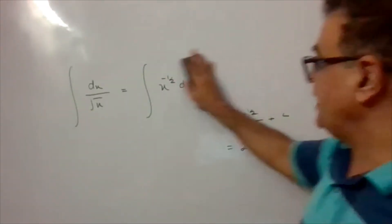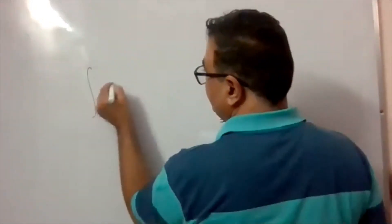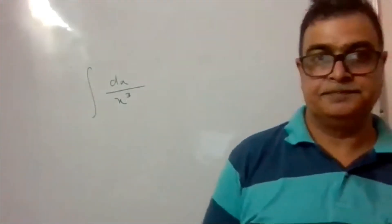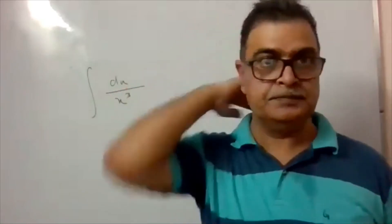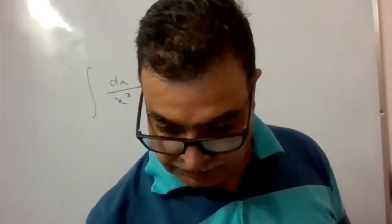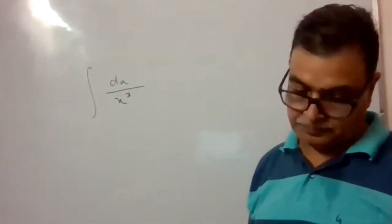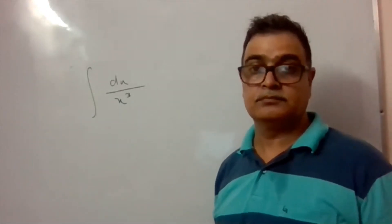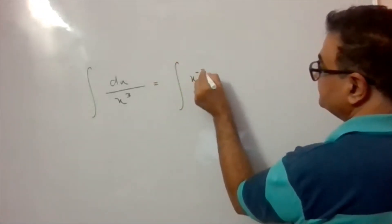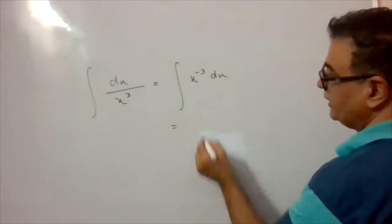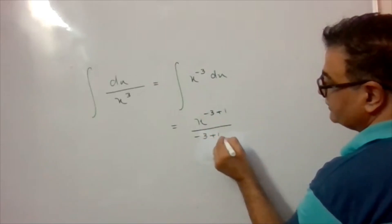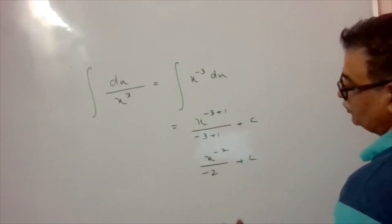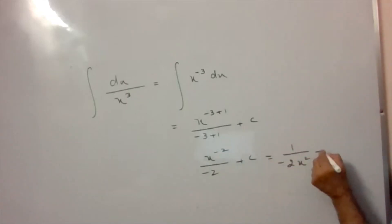Next question: integrate dx/x³. Writing 1/x³ as x^(-3), applying the formula: x^(-3+1)/(-3+1) + C = x^(-2)/(-2) + C = -1/(2x²) + C.